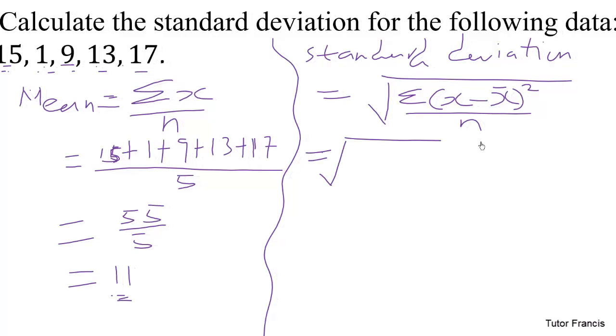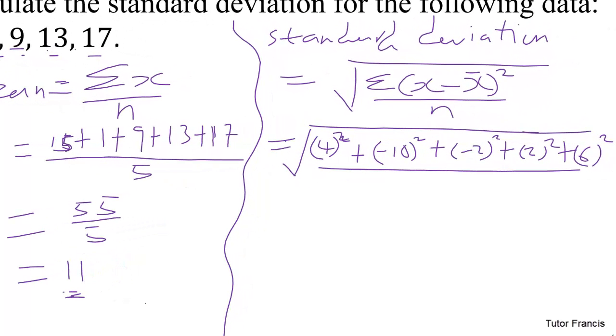So this will be equal to square root of, now 15 minus 11 is 4, so 4 squared, and 1 minus 11 is negative 10, so negative 10 squared. 9 minus 11 is negative 2, so negative 2 squared. 13 minus 11 is 2, so 2 squared. 17 minus 11 is 6, so 6 squared, all divided by 5.